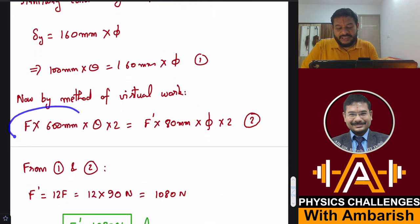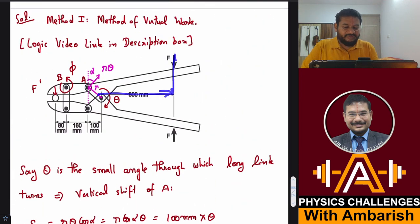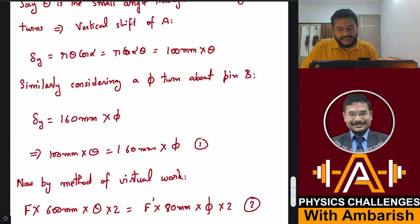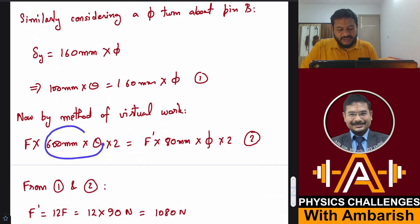So F into 600 mm into theta into 2. Why? Because this distance is 600 mm, so F into 600 mm into theta is the displacement of this point, because this turns to an angle. The vertical displacement of this point must be 600 into theta, in the same way as the vertical displacement of pin A was R cos alpha into theta. Same way, this vertical displacement is simply 600 mm into theta. So 600 mm into theta into 2.